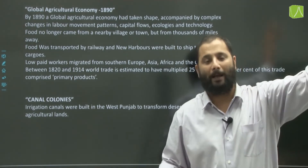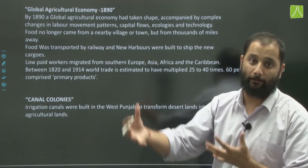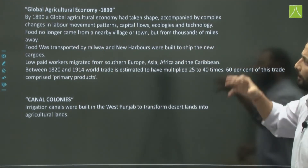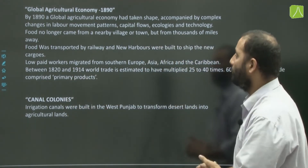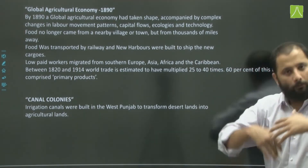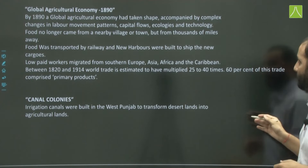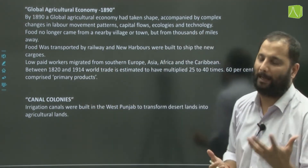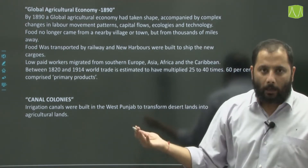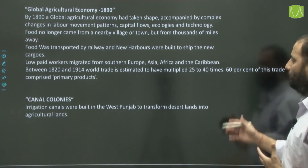Between 1820 and 1914, world trade is estimated to have multiplied 25 to 40 times, with 60 percent comprising primary products. Even in India, canal colonies were developed where the British provided irrigation and asked people to settle and practice agriculture. Irrigation canals were built in West Punjab to transform desert lands into agricultural lands.